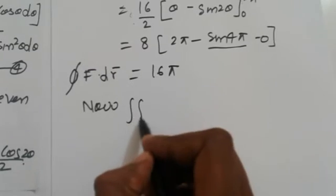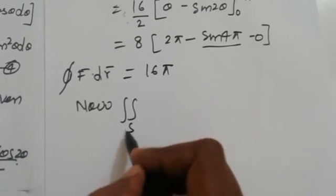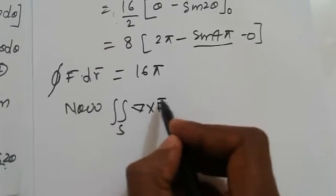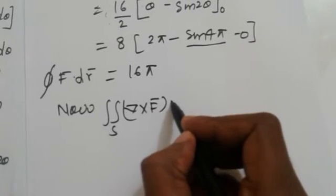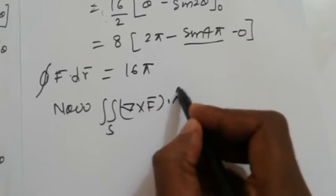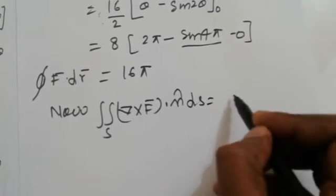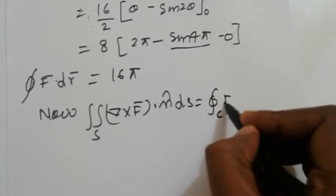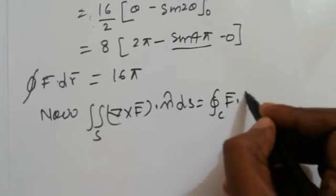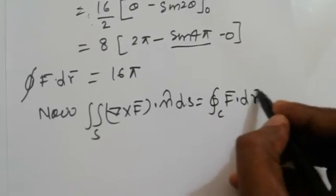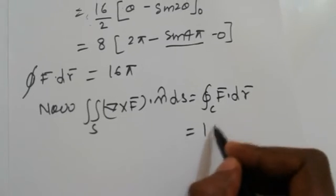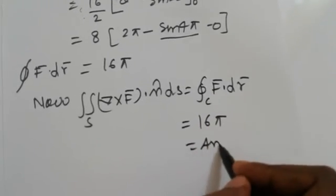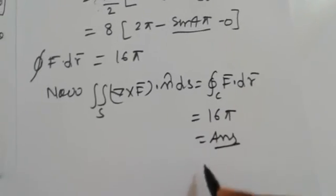Therefore, the double integral over S of (∇×F)·n̂ dS equals the closed line integral C of F·dr, which equals 16π. That is the answer. Thank you.